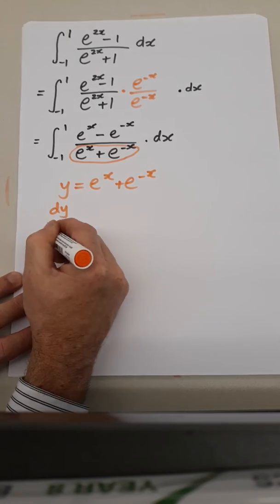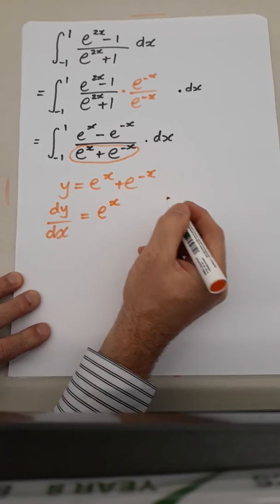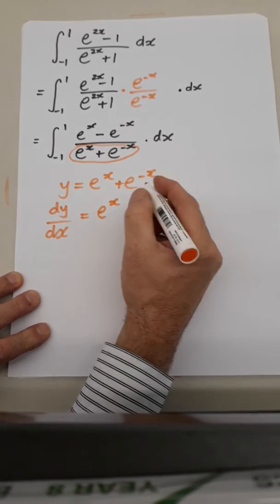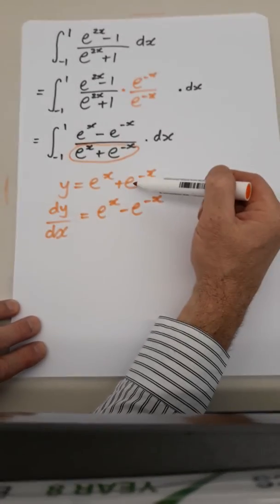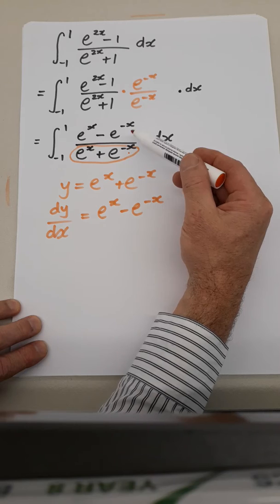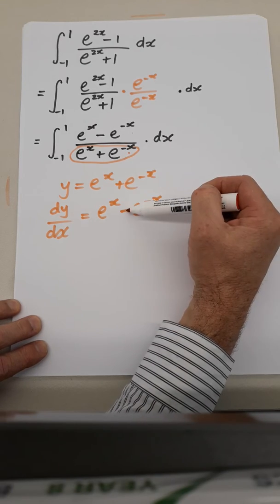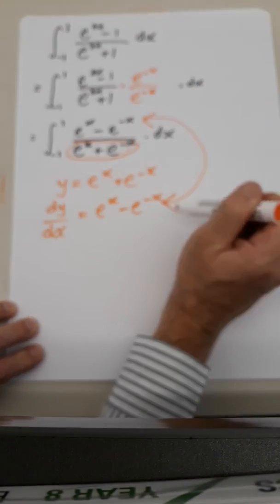What is the derivative of that? Well, the derivative of e to the x is e to the x. The derivative of e to the minus x is minus e to the minus x. True? So, if that's the denominator, the numerator turns out to be the derivative of the denominator.